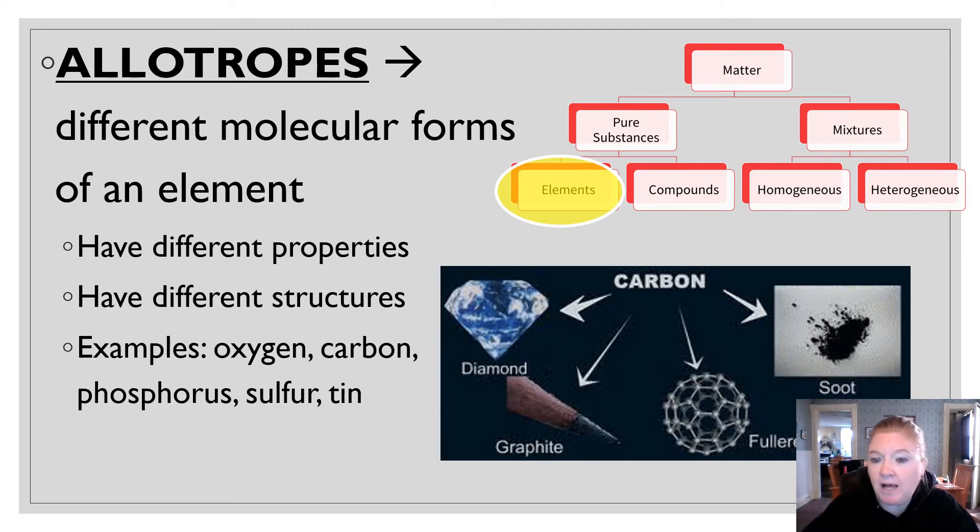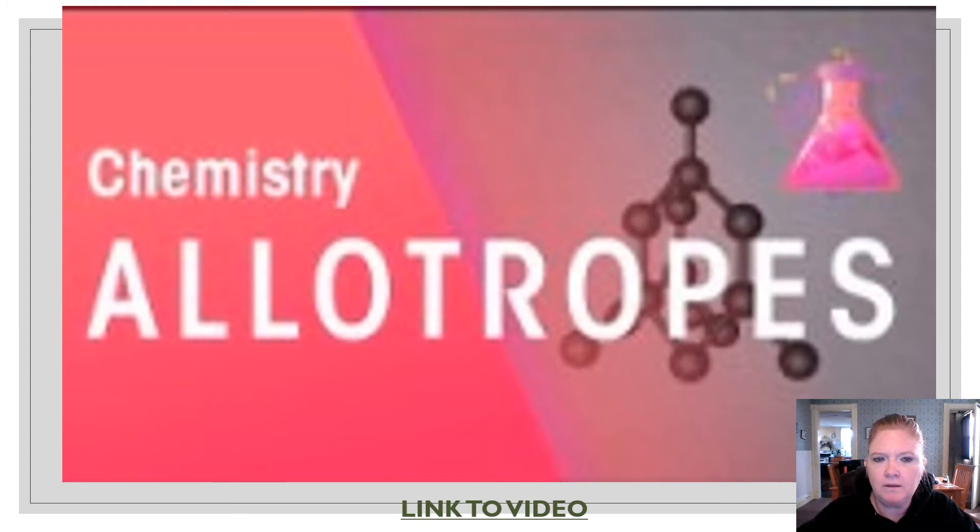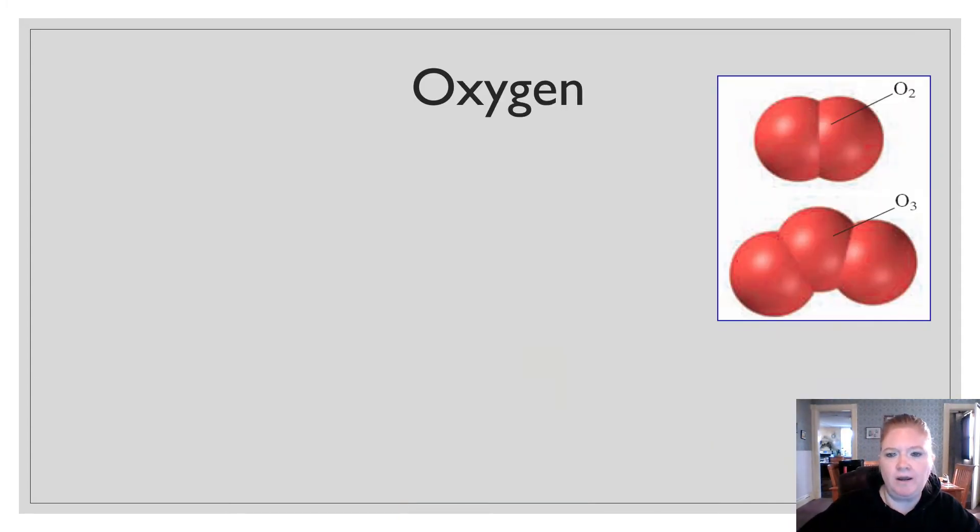So some common elements that have allotropes are oxygen, carbon, phosphorus, sulfur, and tin. So let's look at some of them. All right, so we have oxygen.